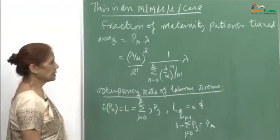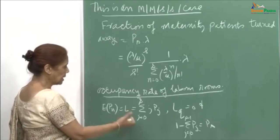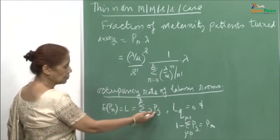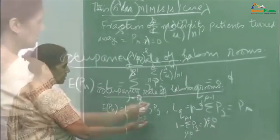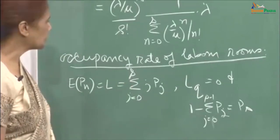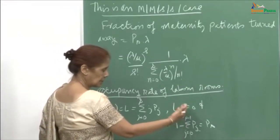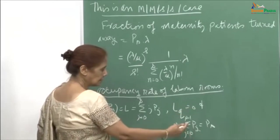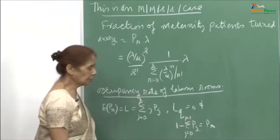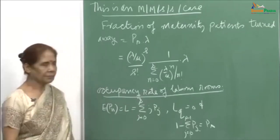To compute the occupancy rate of the labour rooms, we compute L = expected value of p_n = summation j from 0 to s of j times p_j, since only 0 to s patients are permitted. Therefore Lq equals 0 — there will be no waiting queue — and 1 minus sigma p_j (j from 0 to s minus 1) equals p_s. With these conditions we can compute the occupancy rate of the labour rooms.